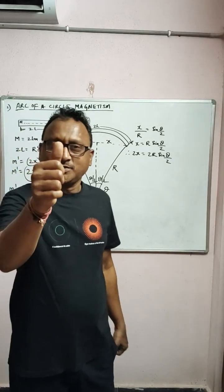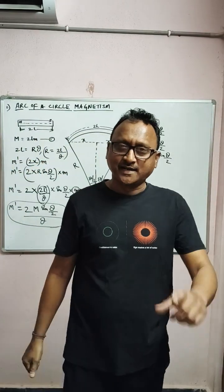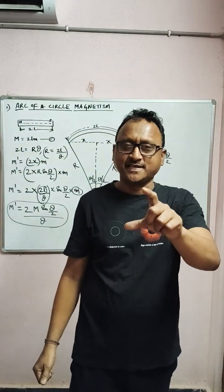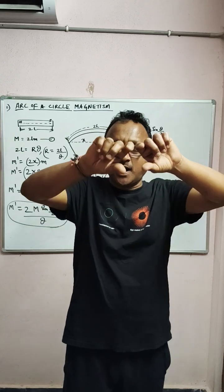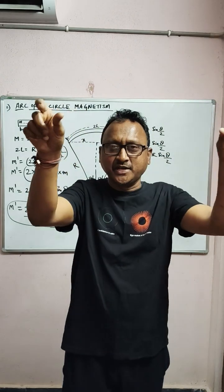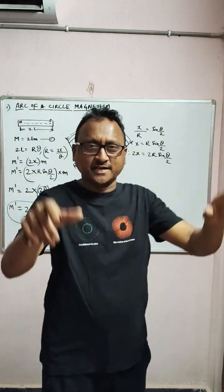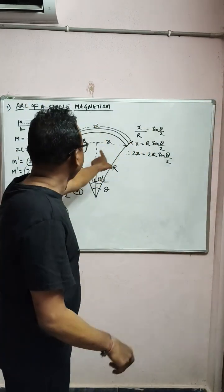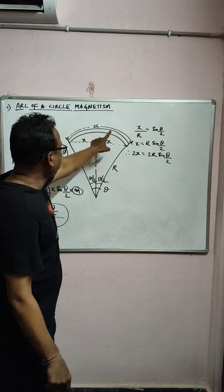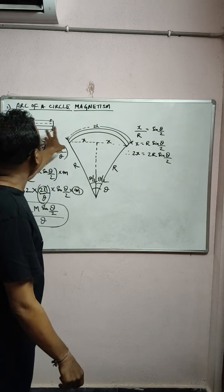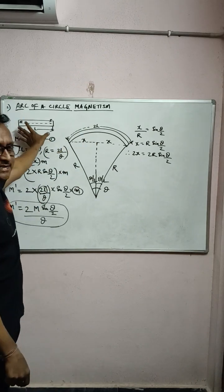Hi friends, today in the magnetism chapter we will see what happens when a bar magnet is bent into an arc of a circle.